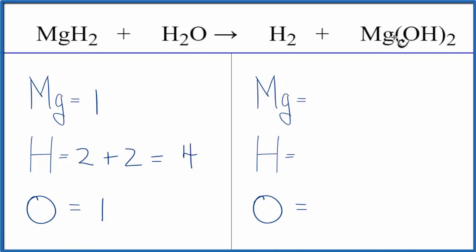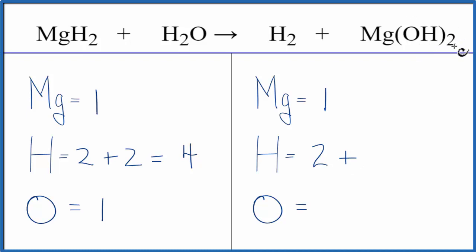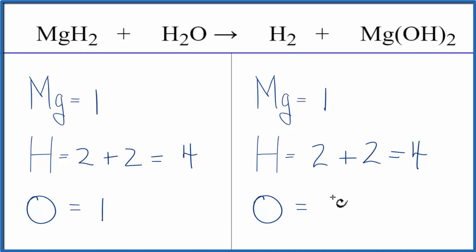On the product side we have the one Mg, and then for the hydrogens we have the two here plus this two. This applies to everything in the parentheses, so we have the one hydrogen times the two, so we have two more — that gives us four hydrogens. And then the oxygen: two times the one oxygen gives us two oxygen atoms.